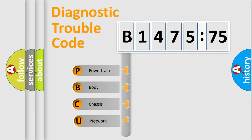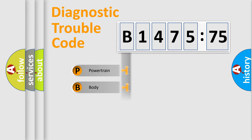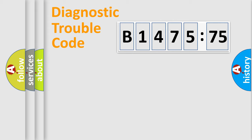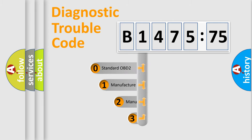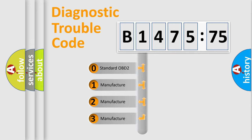First, let's look at the history of diagnostic fault code composition according to the OBD2 protocol, which is unified for all automakers since 2000. We divide the electric system of an automobile into four basic units: powertrain, body, chassis, and network. This distribution is defined in the first character of the code.